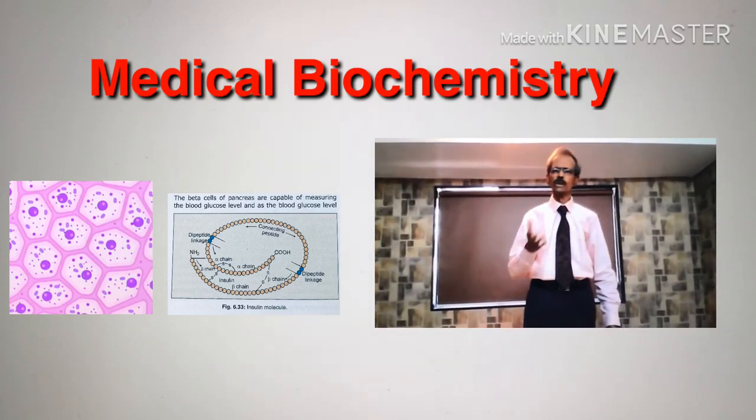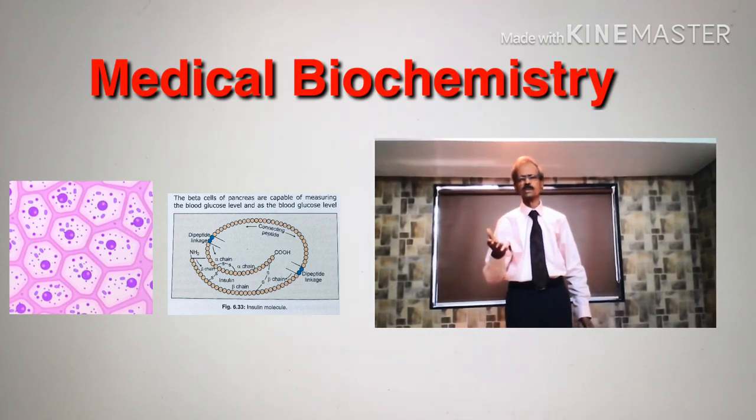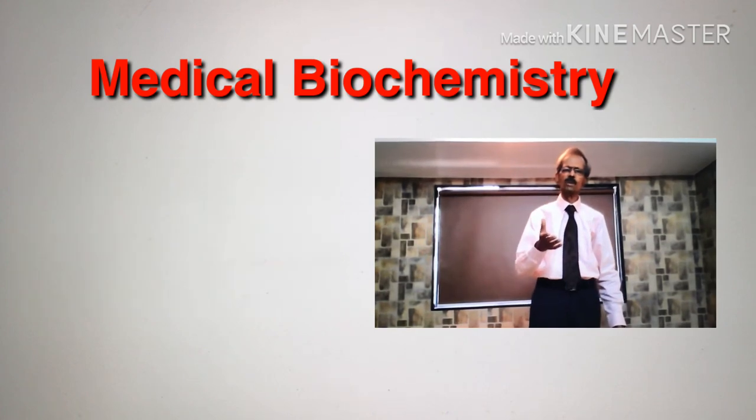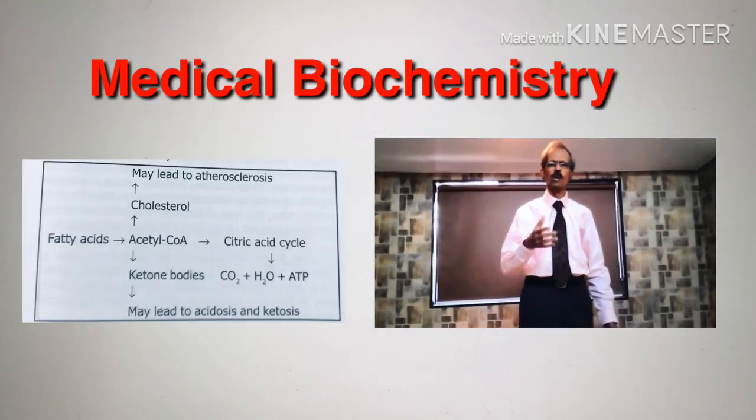They tend to use more lipids and amino acids to produce energy. As a result, cholesterol and ketone substances increase in blood circulation.